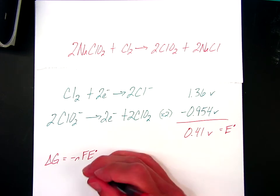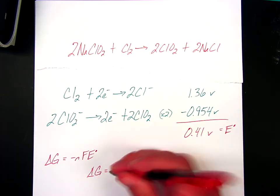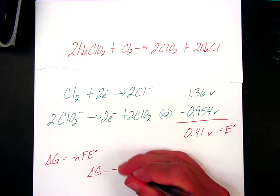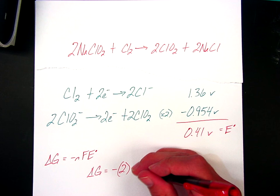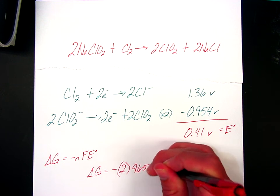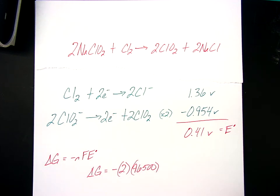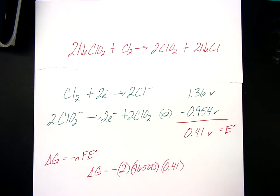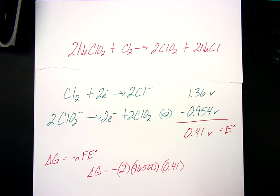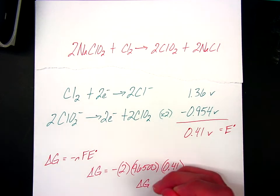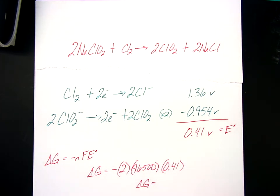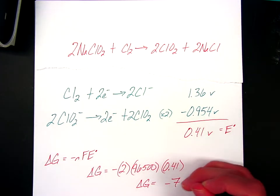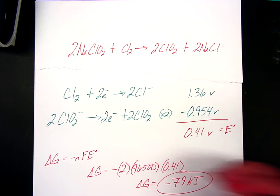And if you remember it looks like this—this is what we're filling in. Delta G is going to equal negative, how many electrons do the half reactions have in common? Two. What's Faraday's constant? This big value. What's our voltage? 0.41. That will get you a final delta G of negative 79 kilojoules.